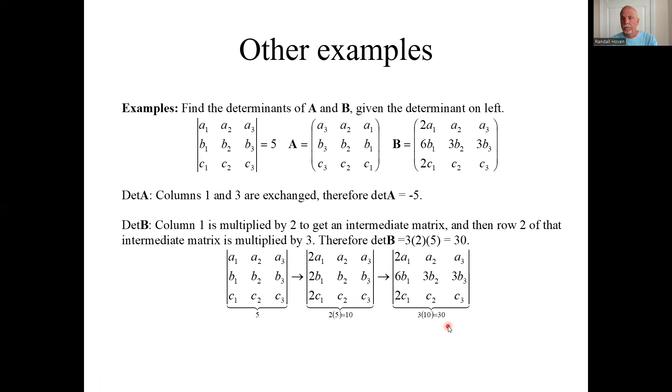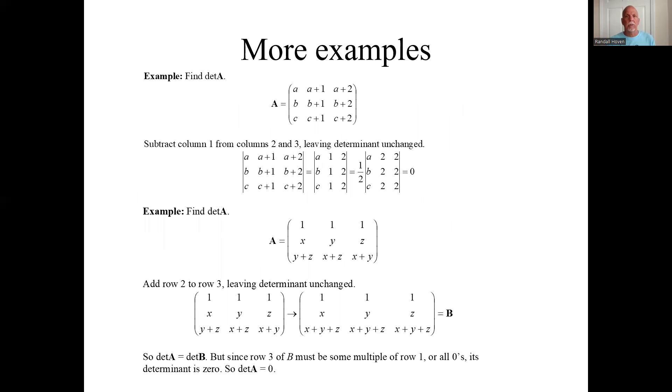Which is 30. Each operation is its own thing. You'll get like an intermediate matrix. But if you can put that in your head, you don't have to write all that. You can just see, well, I had to multiply one column by two and a row by three. And I could have done it in either order. I could have multiplied this row by three and then that column by two. We'll end up with this.